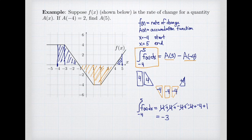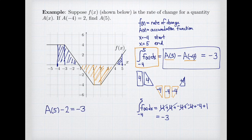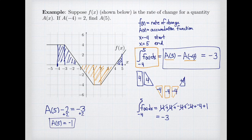When I add these numbers up — several of the 4's cancel each other out — I have a grand total of negative 3. That means my accumulation function has gone down by 3 units. Setting up my equation: my ending value a(5) minus my starting value of 2 equals the net change of negative 3. Adding 2 to both sides, I find that a(5) equals negative 1. I started at 2, decreased by 3, and end at negative 1. That's how definite integrals measure how much accumulation functions change — the definite integral of the rate equals the change in accumulation.